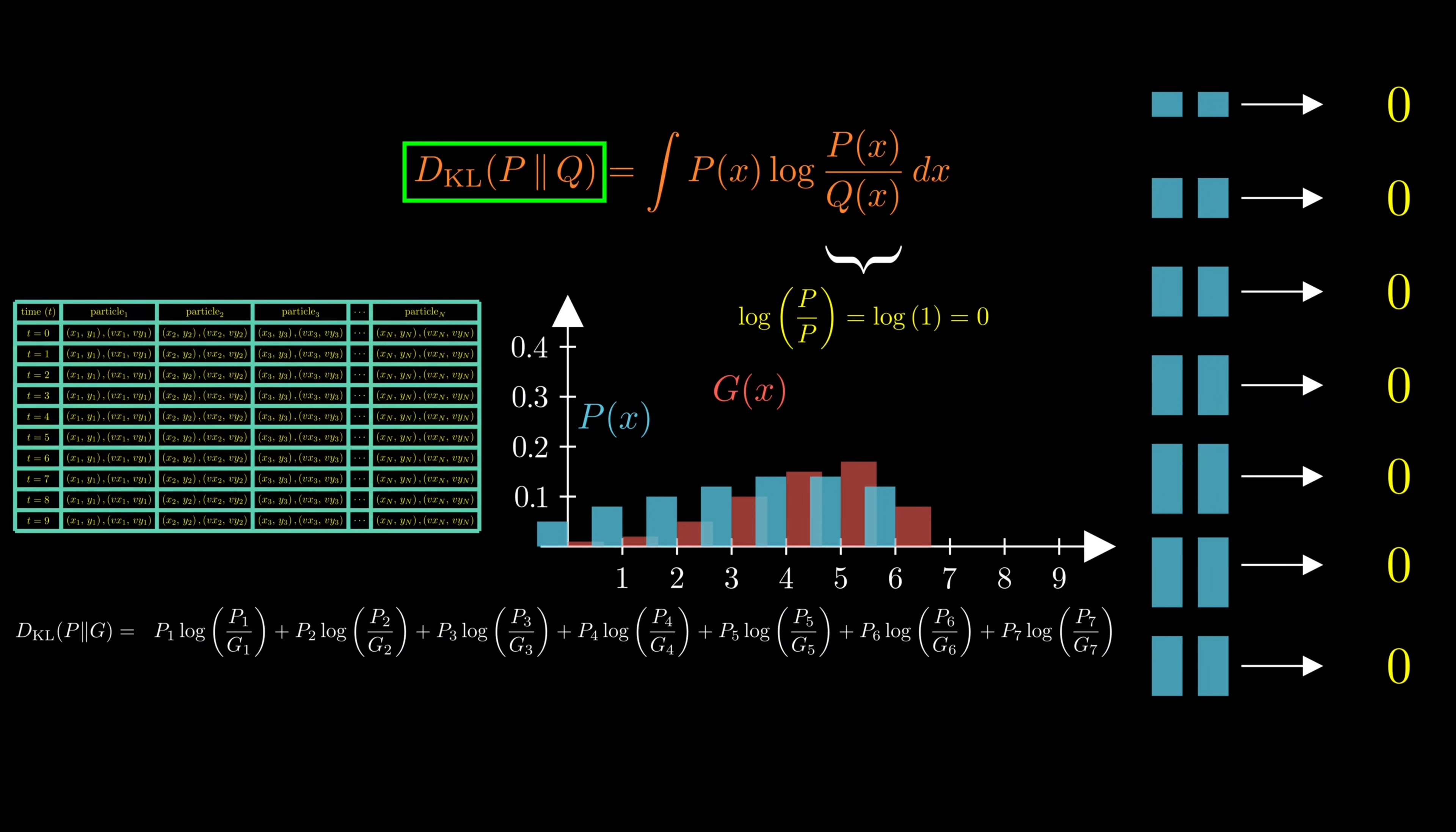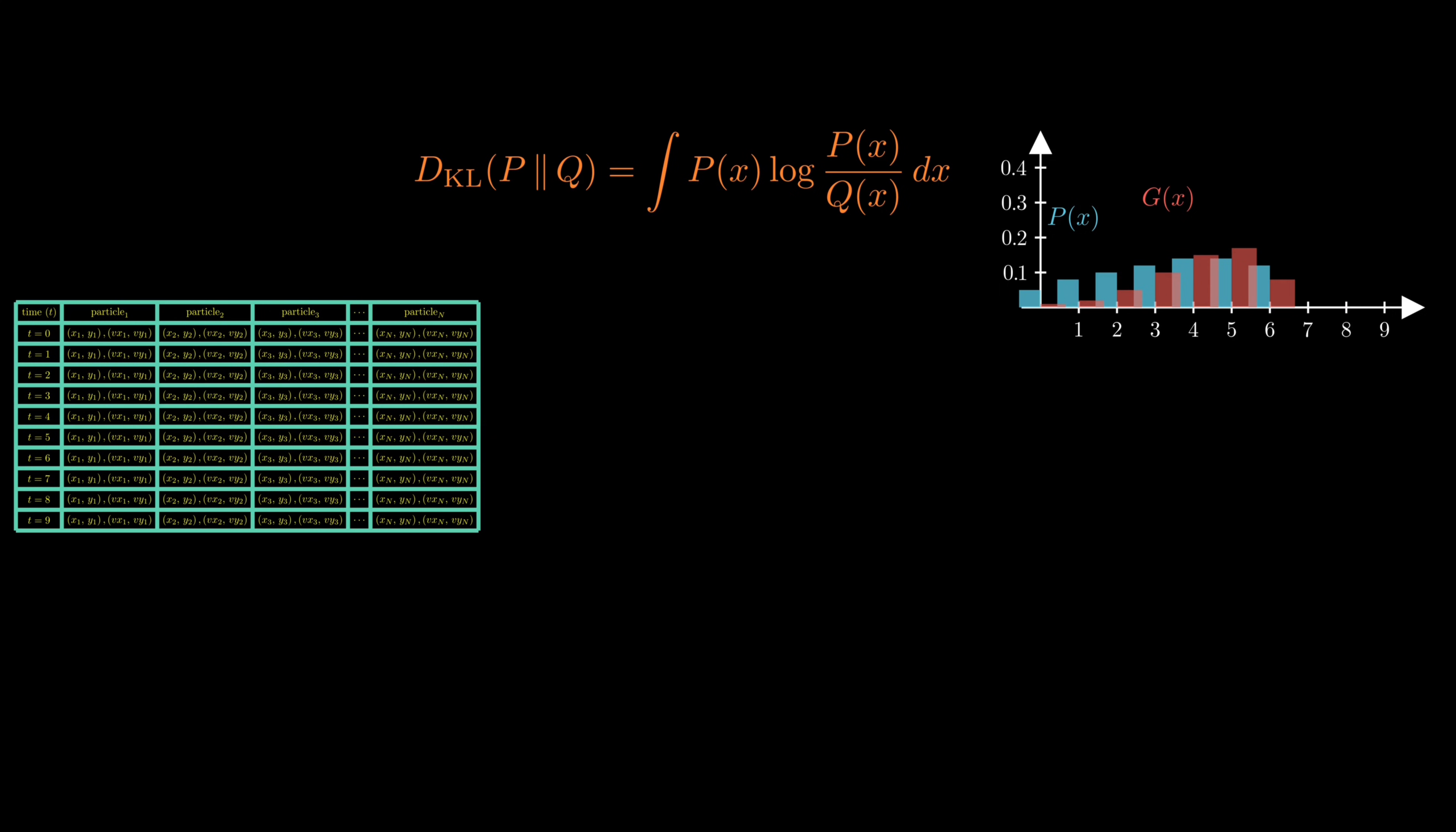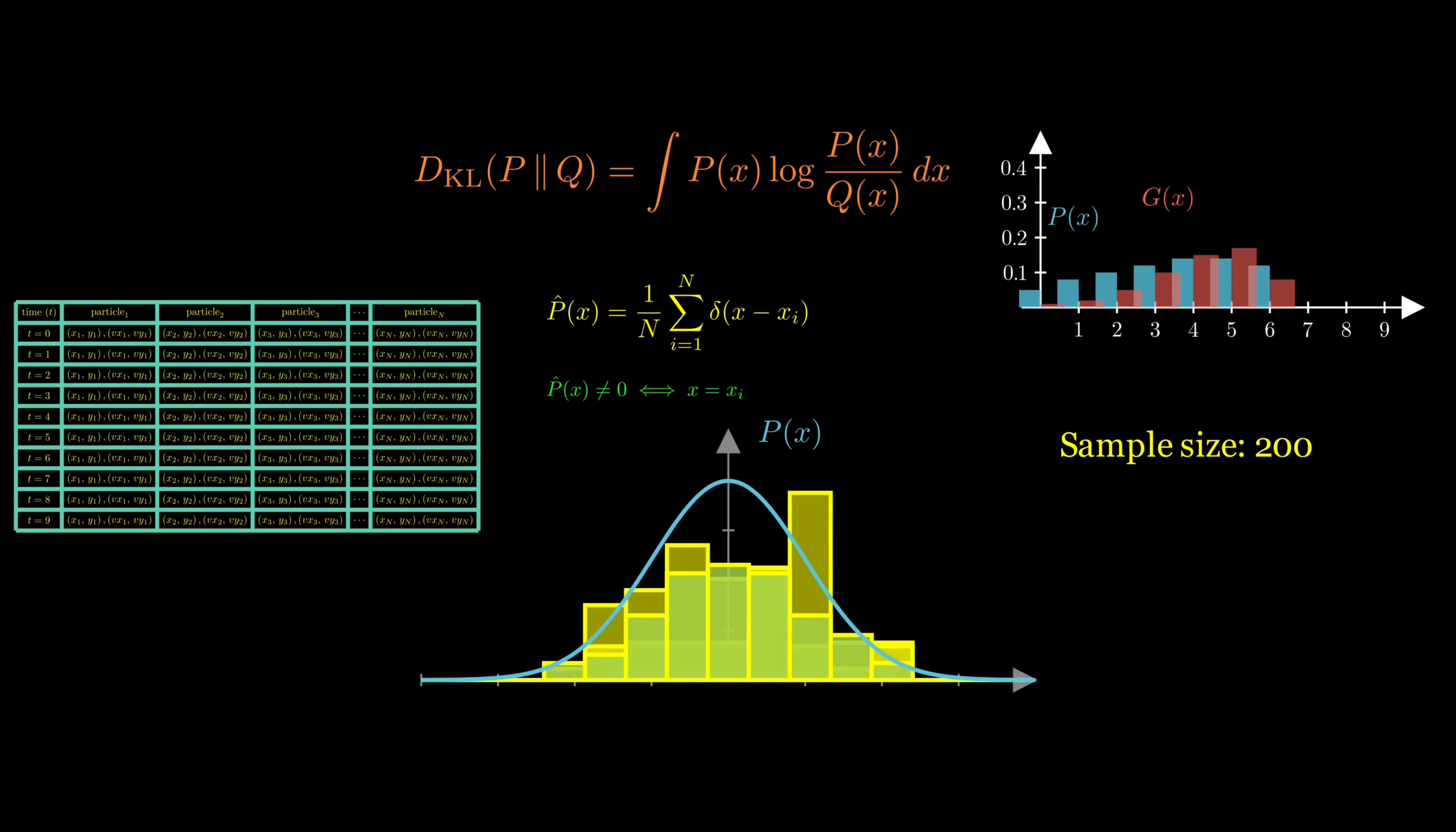The answer is to use our data to construct a non-parametric estimate for the true distribution P, called the empirical distribution. In this equation, the Dirac delta function means that our estimate for the probability is only non-zero where data points enumerated by index i are located. Also, capital N is the total number of rows in our data set. Why does this work? The law of large numbers tells us that, as the amount of data grows, the empirical distribution converges to the true distribution. So the more data we collect, the better our estimate of P becomes.